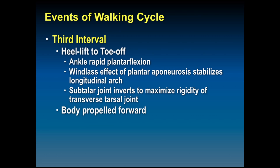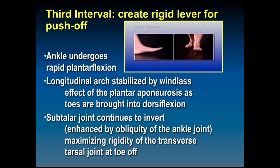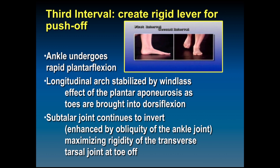The subtalar joint inverts to maximize the rigidity of the transverse tarsal joint and the body is propelled forward at toe off. Body weight gradually reduces as we go into the swing phase. The ankle goes from dorsiflexion to plantar flexion. The foot goes into supination and the tibia goes into external rotation.